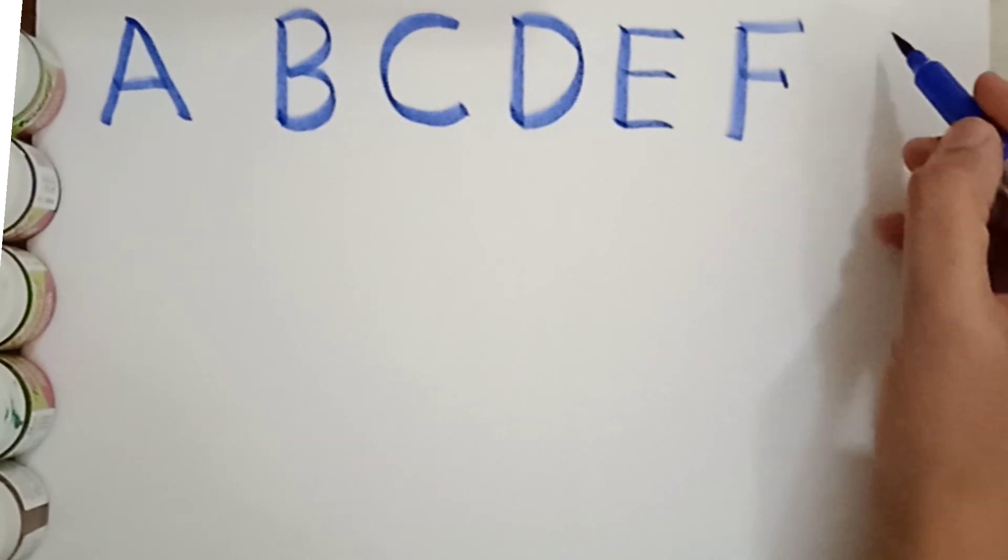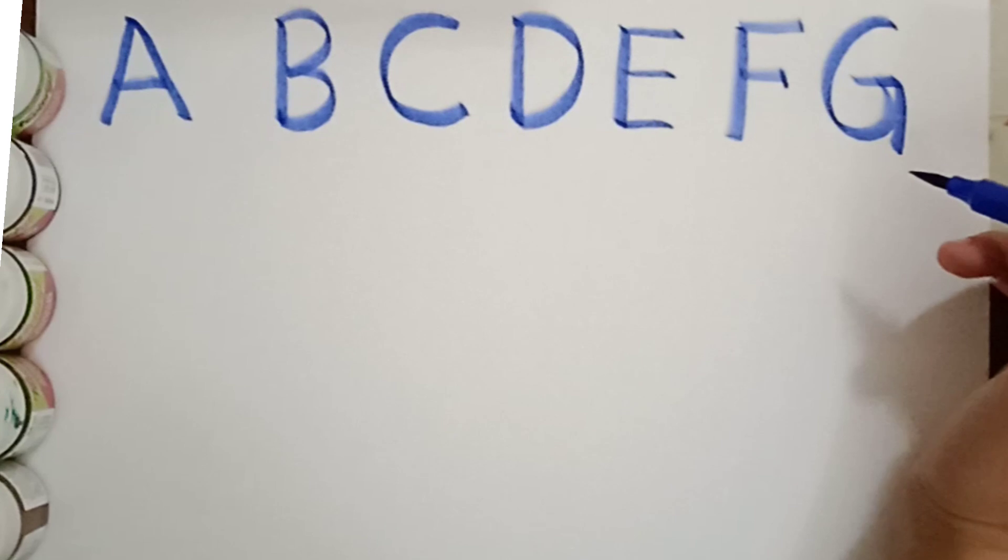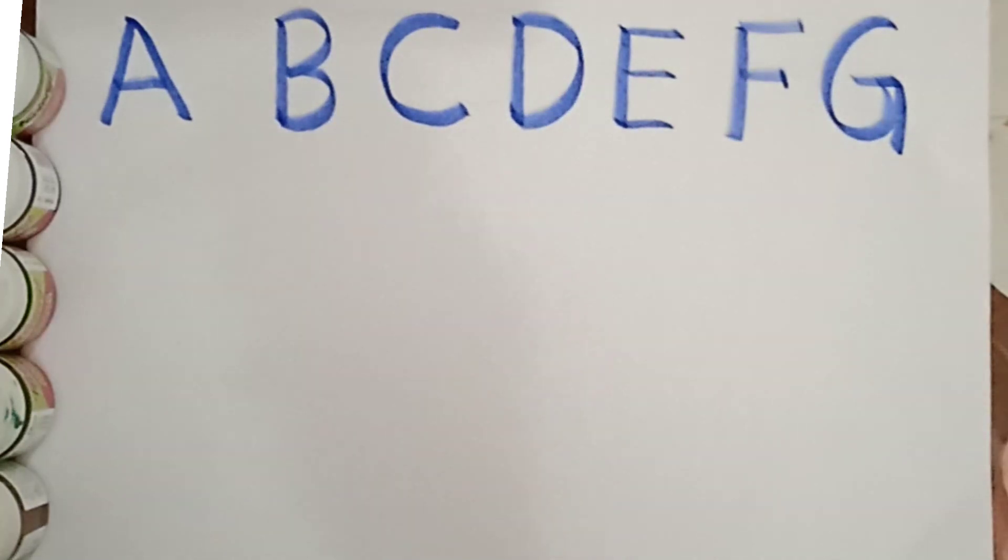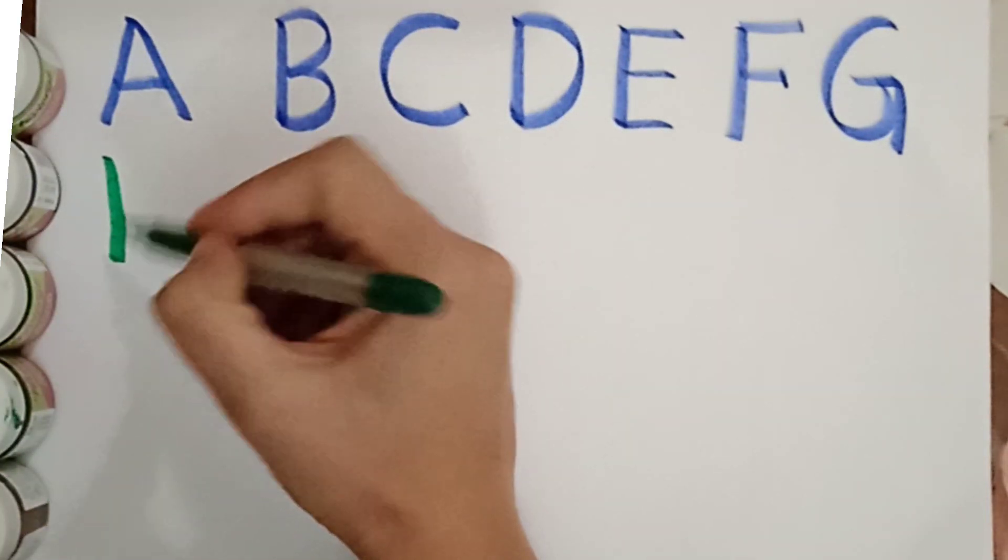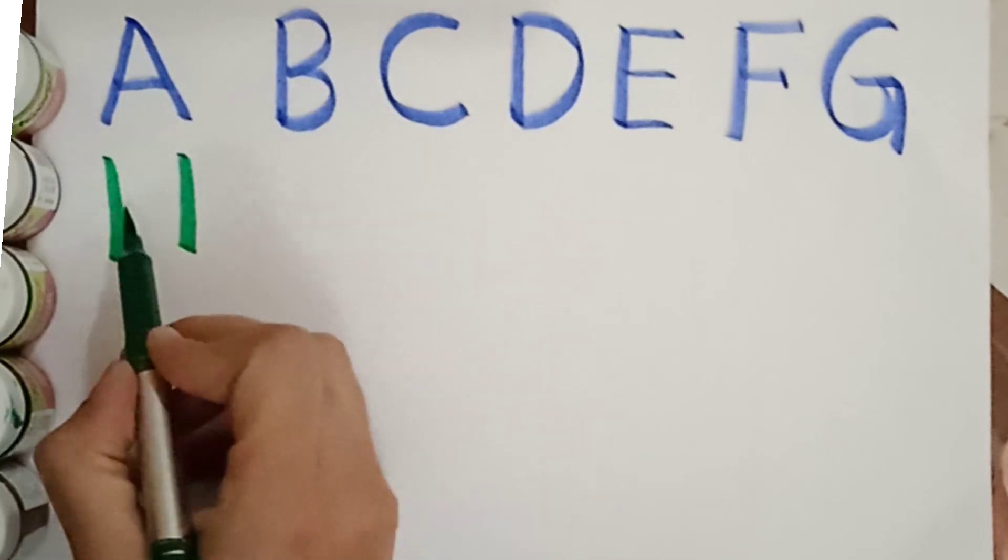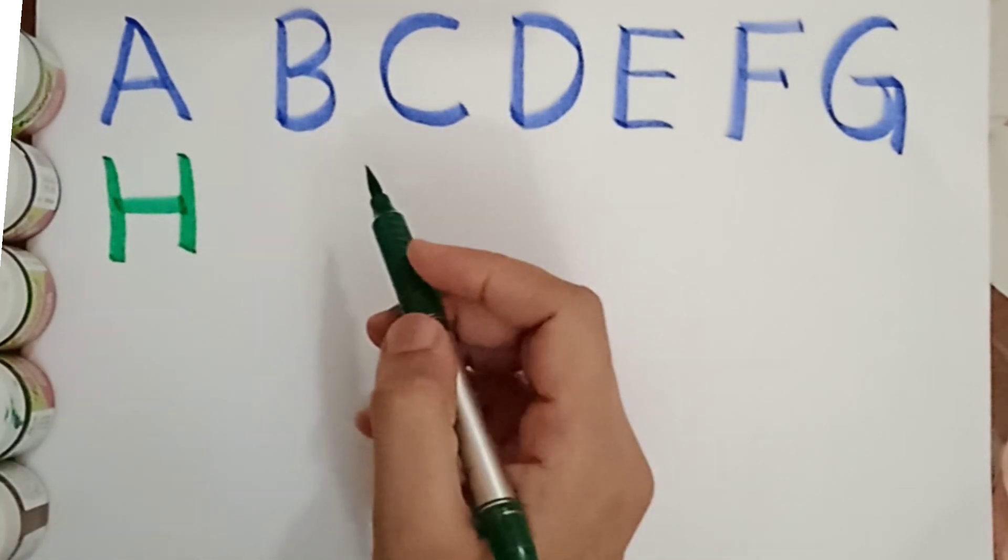What comes after F? G. G for grapes. Juicy grapes. Very nice. Now, come on the next letter. H. H for hen. H for hen.